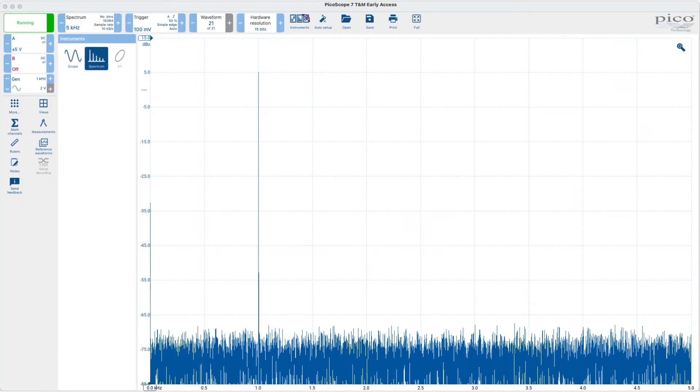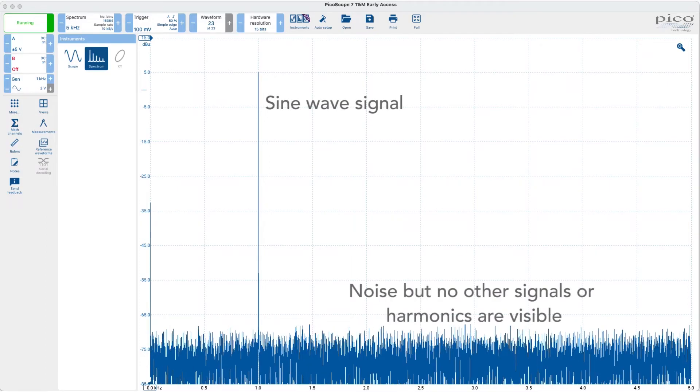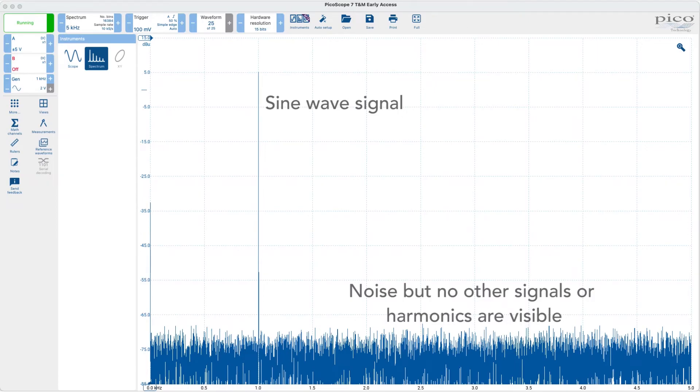If we look at the spectrum of a sine wave, then we see that it consists of a single frequency. There are no harmonics or other signals apart from the background noise. A sine wave is just a single frequency and in fact it is the building block for other periodic waveforms.